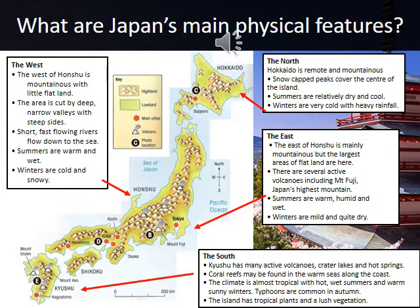From what you've learned previously in geography about settlements and how they develop, have a think: why is Tokyo where it is, and why did it become the capital city?